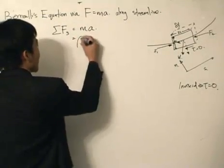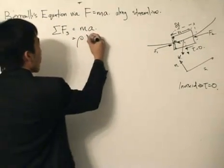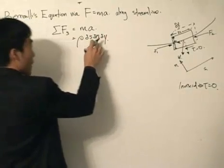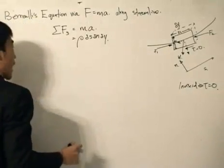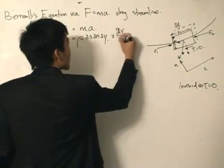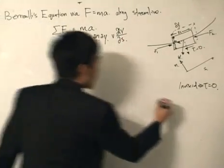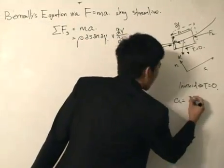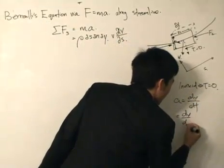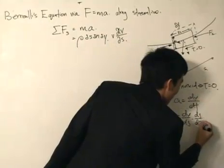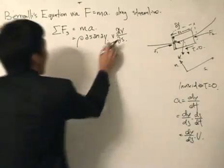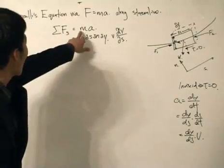The mass is given by density multiplied by the volume — that's a small change in S, a small change in N, and a small change in Y. The acceleration I'll rewrite as V times partial V over partial S. Quickly looking at it: acceleration is dV/dt, which I rewrite as dV/dS multiplied by dS/dt, which equals dV/dS multiplied by V. That is what we have on the right-hand side.